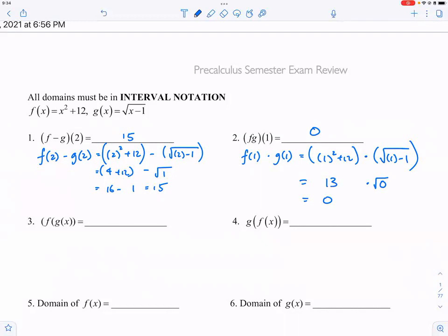Now if you know how to do number one, number two, if you know how to do F of two, G of two, F of one, and G of one, then it's going to make number three and number four very easy.